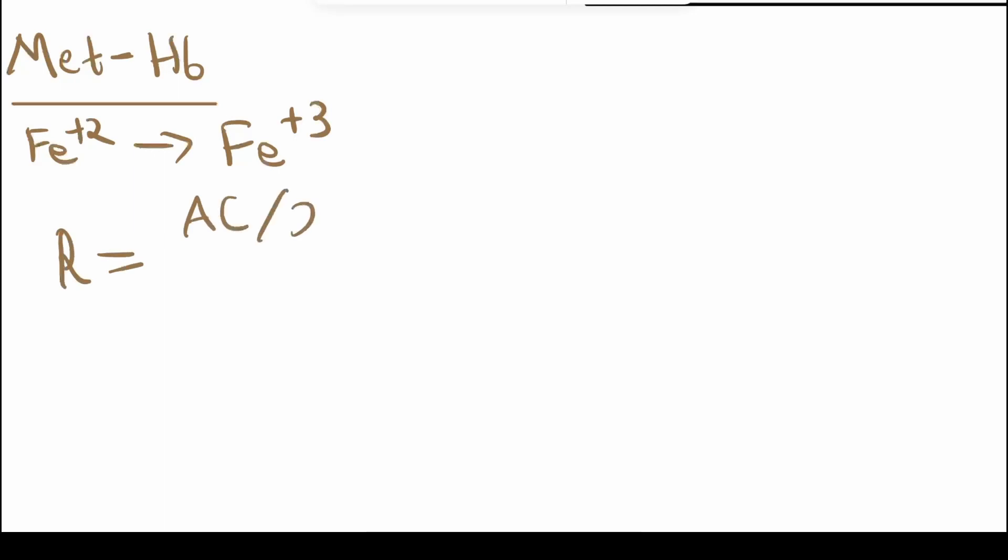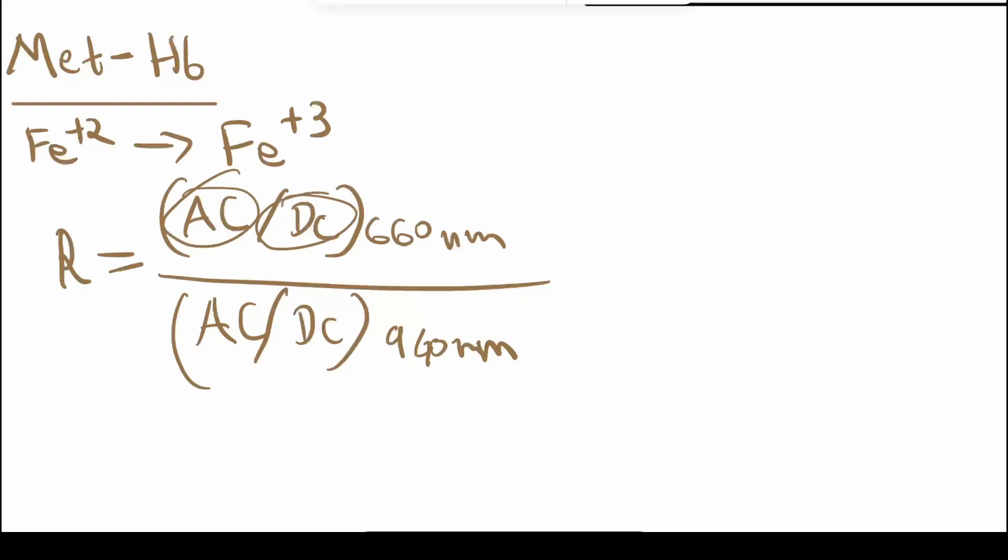The R number is AC/DC of 660 nanometers over AC/DC of 940 nanometers. What this is, is the ratio of active pulsatile flow over the non-pulsatile flow at 660 nanometers divided by the ratio of active pulsatile flow over inactive non-pulsatile flow observed at 940 nanometers. So this is reported as a ratio.